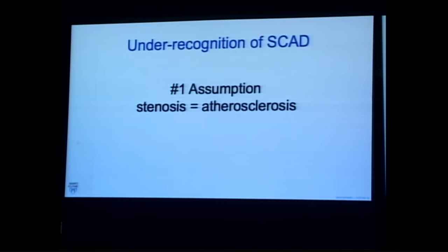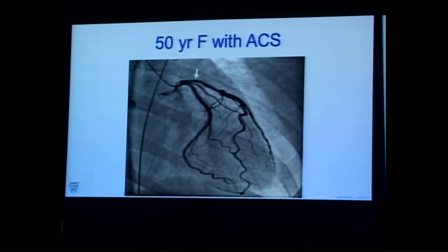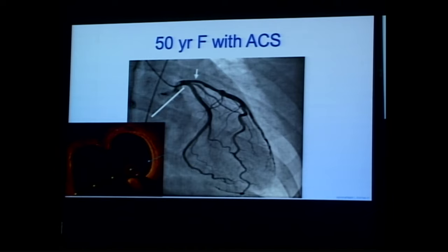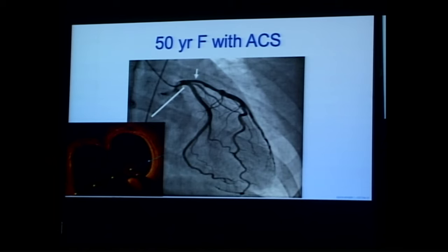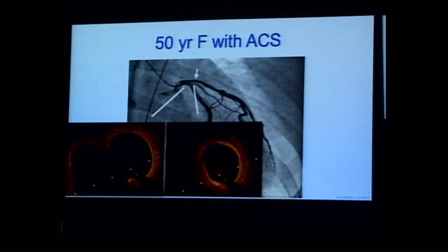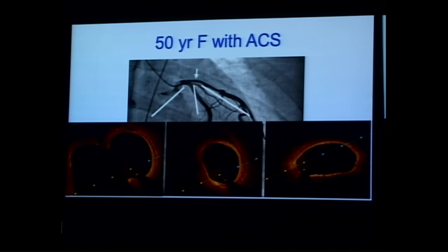One reason for under-recognition is we assume everything is atherosclerosis. Here's a 50-year-old female with an ACS — a few years ago we might have called this normal coronary arteries or minimal atherosclerosis. If you evaluate with OCT, you see at the left main bifurcation a tiny blip, which evolves over the next frames into a crescent, and then the whole vessel is surrounded by intramural hematoma causing a compressive, relatively minor narrowing. This is spontaneous dissection and intramural hematoma of the proximal LAD.